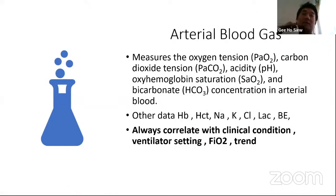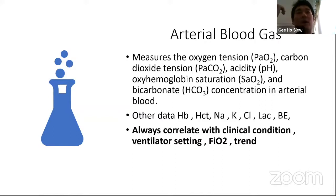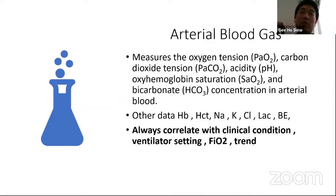What is arterial blood gas? ABG is one of the measures to check the patient's oxygen tension — which is PaO2 — carbon dioxide tension in the blood, as well as the acidity, hemoglobin status, and bicarb concentration. Some ABG machines also provide additional data such as hemoglobin, hematocrit, sodium, potassium, chloride, lactate, and base excess. When interpreting this data, always correlate with the patient's clinical condition, ventilator settings, FiO2, and the trend of the ABG — which will determine whether this patient is getting better or worse.